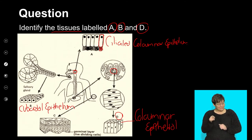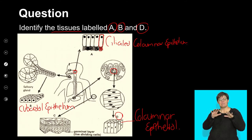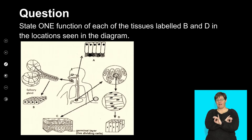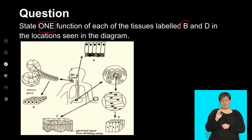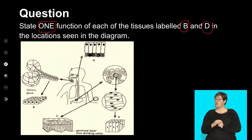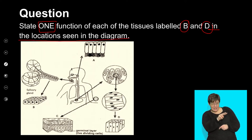Epithelial tissue is easy to identify, so it's a nice question to ask. Some tissues are difficult to see, so examiners usually choose the one that is much clearer and obvious. The next question asks: state one function of each of the tissues labeled B and D in the locations seen in the diagram. That last part — 'in the locations seen in the diagram' — is very important.